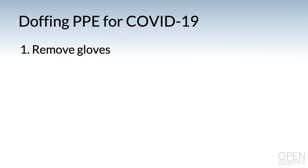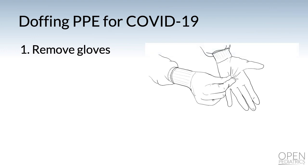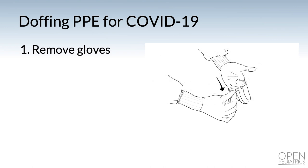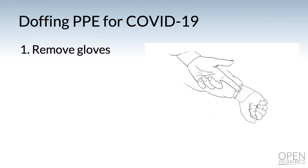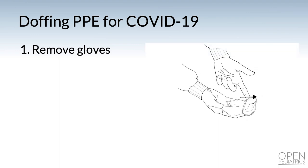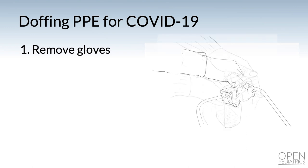First, take off your gloves — the outside of your gloves are contaminated. Using your gloved hand, grasp the palm of the other gloved hand and peel off your first glove carefully, without snapping it. One finger at a time, take your time, pull the glove off and discard it. Then use the fingers of your ungloved hand to slide under the cuff of your remaining gloved hand, peel that glove back — touching only the inside — and throw it away. Discard the glove and perform hand hygiene.